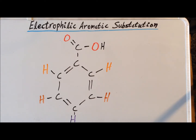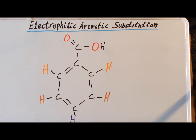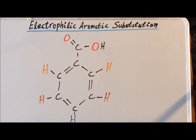Our first substituent is the carboxy group, the COOH, that we recognize from carboxylic acids. When such a substituent is added to a benzene ring, we get the compound called benzoic acid. The carboxyl group deactivates the ring relative to benzene. Therefore, it makes the benzene ring less susceptible to electrophilic aromatic substitution, meaning it takes a greater energy of activation for substitution to take place and that substitution takes place more slowly.